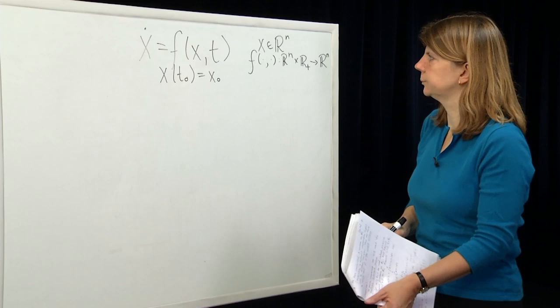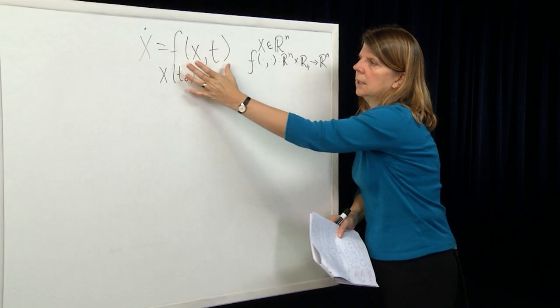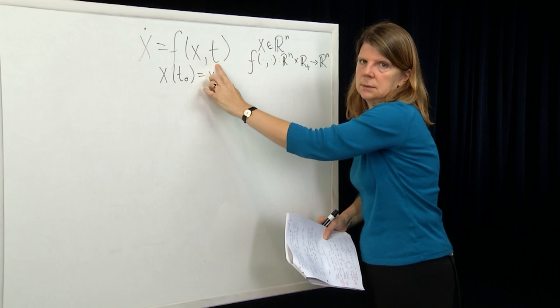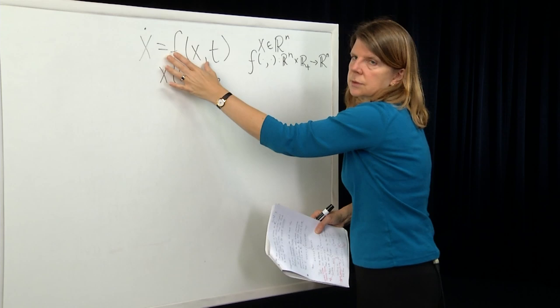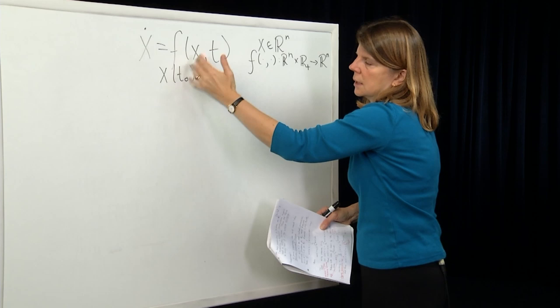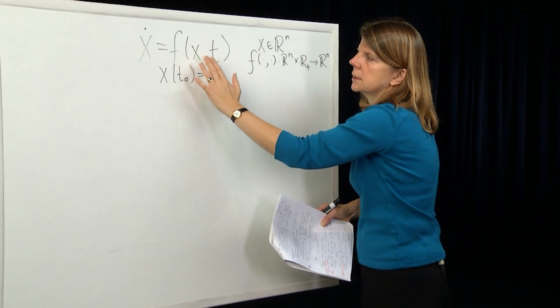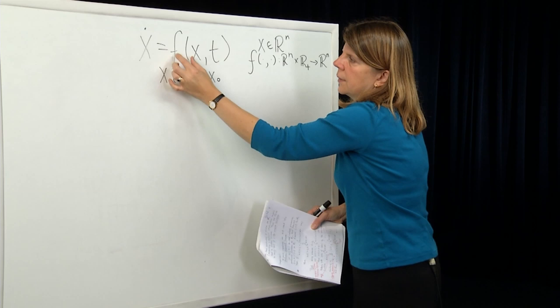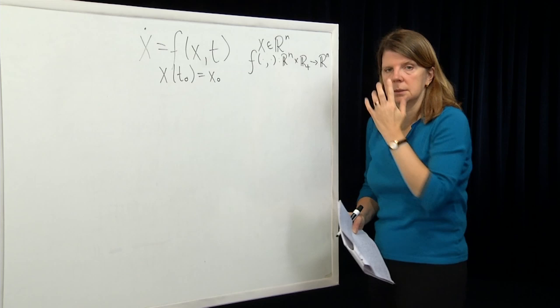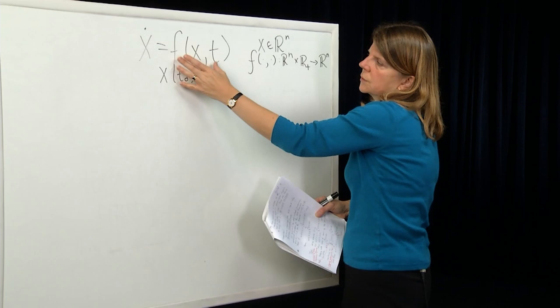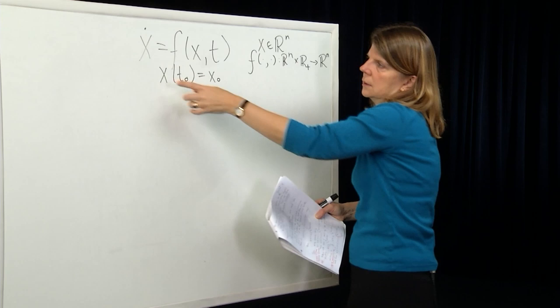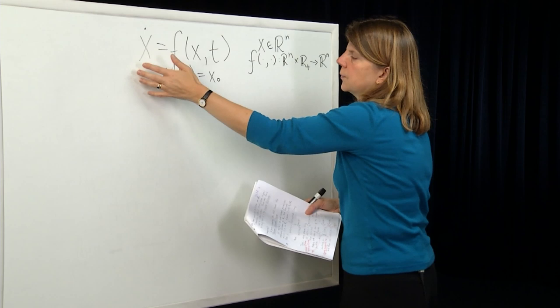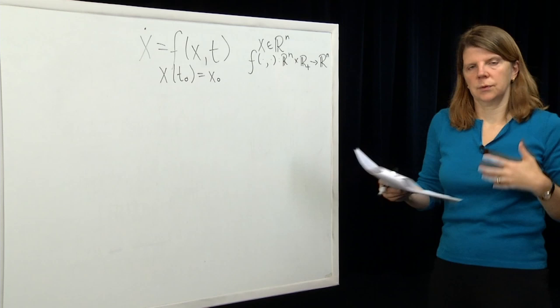What we did last time was we presented the theorem which states that if this function F is Lipschitz continuous in X and piecewise continuous in time, then there exists a unique solution to that differential equation with that initial condition. That solution is a function of time which satisfies this differential equation almost everywhere — everywhere that F is a continuous function of time. Since F only has to be piecewise continuous, there are possible points of discontinuity of F as a function of time, and at those points the derivative doesn't exist. But we still allow the solution to satisfy this differential equation almost everywhere, except at those points of discontinuity.